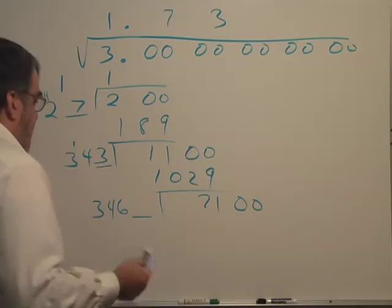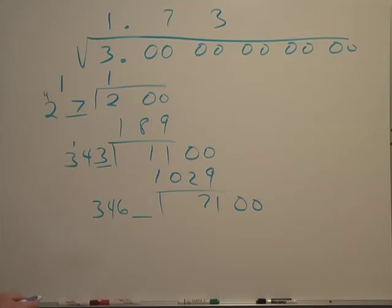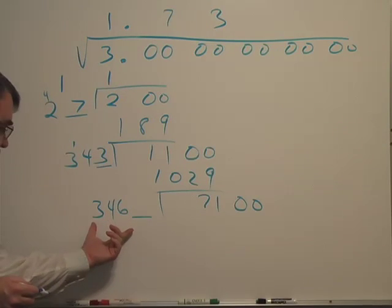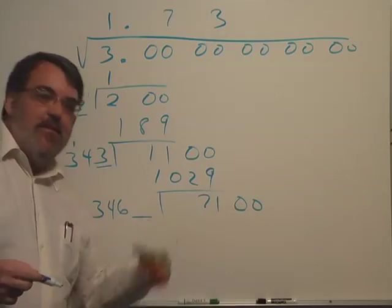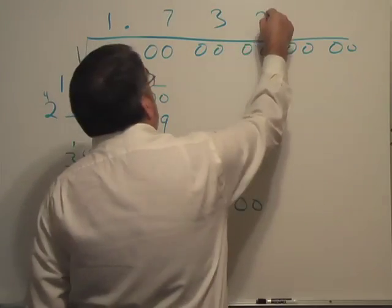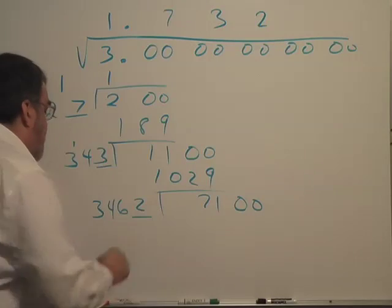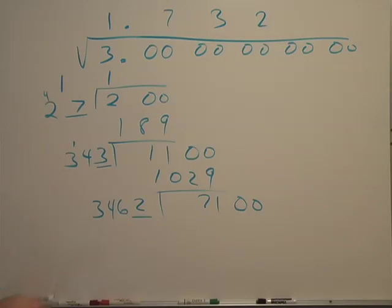It's starting to look pretty repetitive, I'm sure. The next digit would be looks like a 2, because 3460-something divides into 7100 about two times. So put a 2 here and then we multiply.